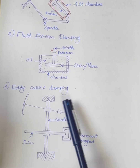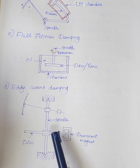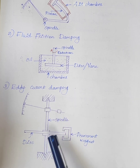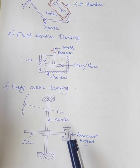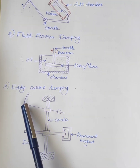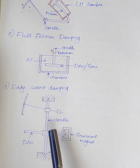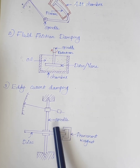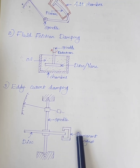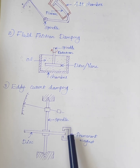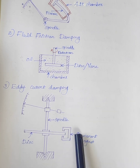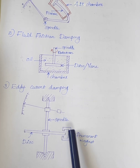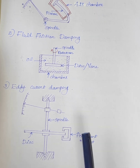The last type is eddy current damping. In this type, a copper or aluminum disc is attached to the moving system, and a permanent magnet is also used. When the pointer moves, the copper or aluminum disc also rotates and cuts the magnetic field produced by the permanent magnet. This induced current interacts with the magnetic field to produce an electromagnetic torque — that is, a damping torque — which opposes the motion.